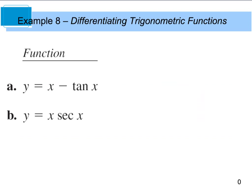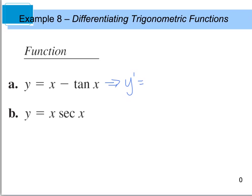So example 8 deals with finding the derivative of x minus tan x. We know the derivative of x, this is really y prime. So the derivative, y prime, is going to give us 1, and then the derivative of tangent is going to be secant squared. So I'm going to go 1 minus secant squared x. And this right here is our derivative.